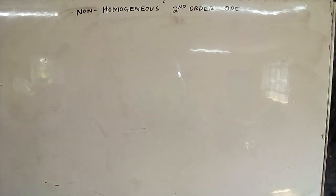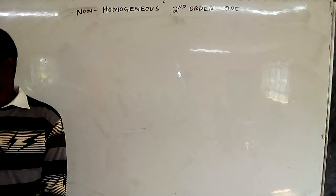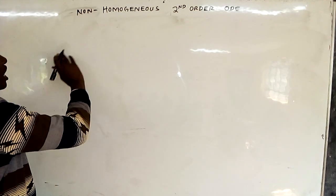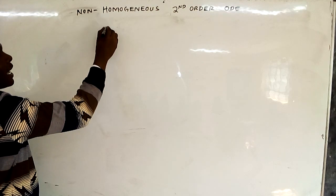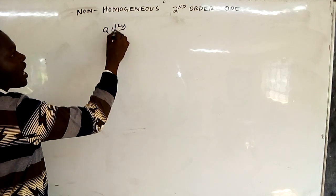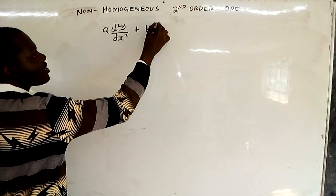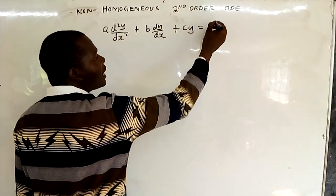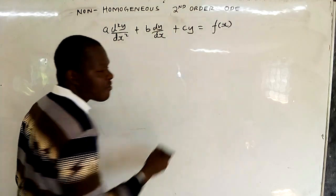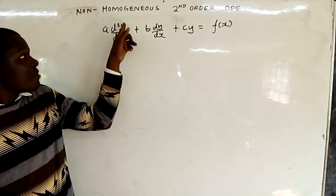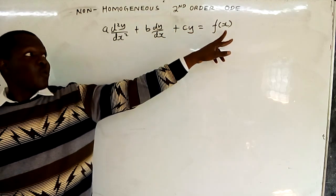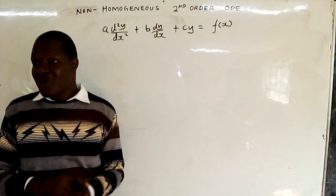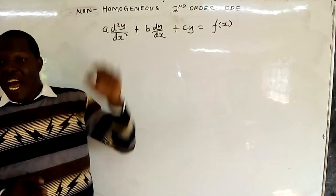How do we solve a non-homogeneous second-order ordinary differential equation? The non-homogeneous second-order ODE has the form: a times d²y/dx² plus b times dy/dx plus c times y equals f(x). Because the right-hand side is a function of x rather than zero, it is no longer homogeneous.